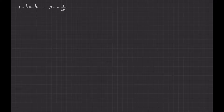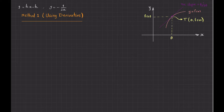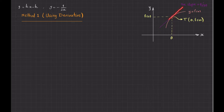Now let us solve the problem. I will solve this problem in two different ways. The first method uses the notion of derivative. Let me remind you of an important thing regarding derivatives. If you look at this picture, let us say that I have a curve with equation y equals f of x, and this point is a point on the curve, and this line is the line tangent to the curve at that point.